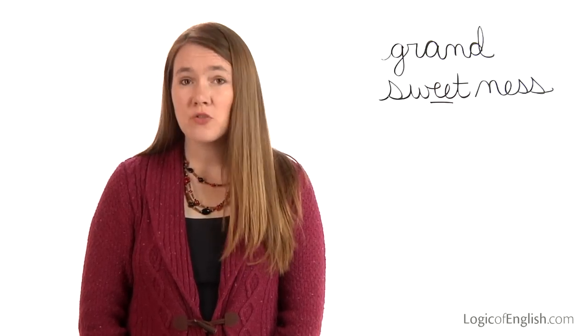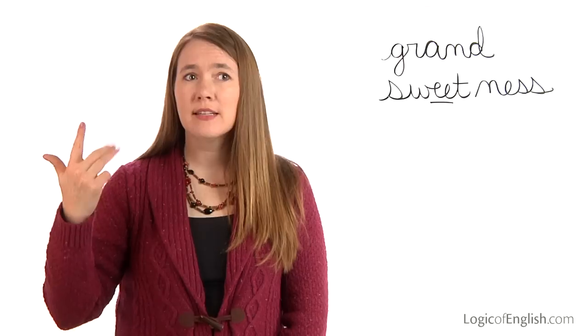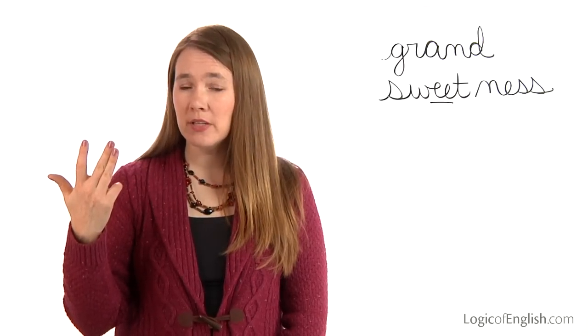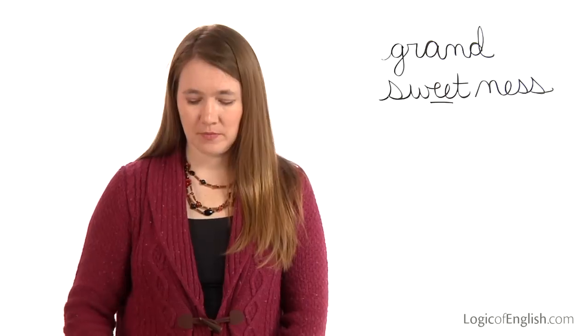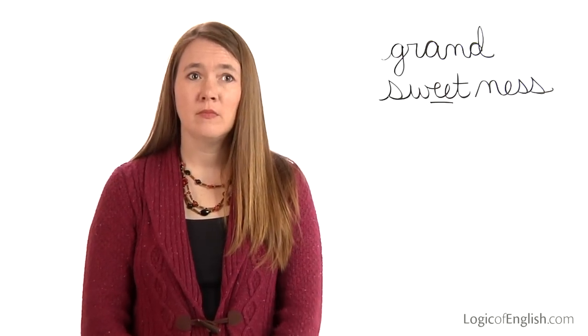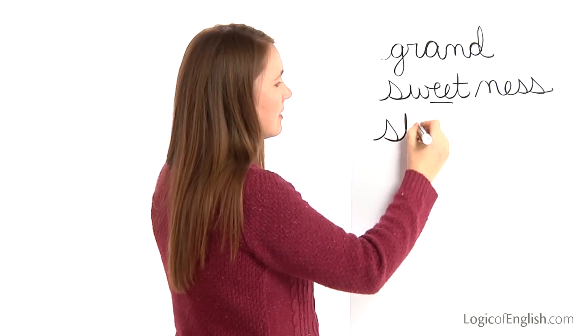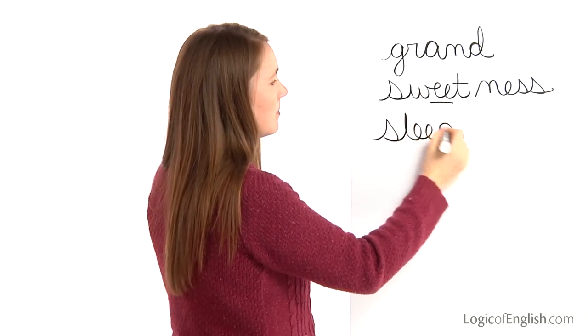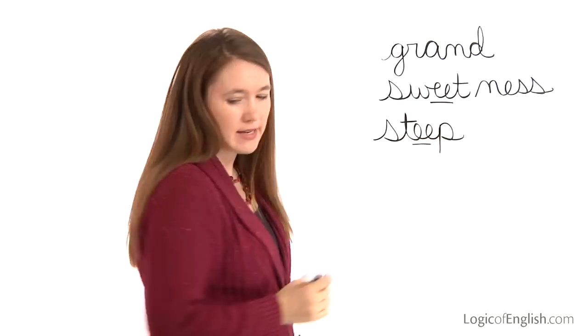The next word is steep. Our driveway is quite steep. Steep. One syllable. Let's sound it out together: S, t, e — this is an e-double-e. Go ahead and write steep. S, t, ee, p. And how do we mark it? We'll underline the e-double-e.